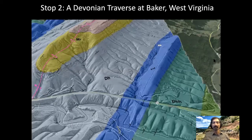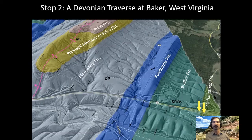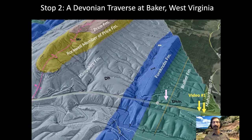So what are we going to see along Stop 2? We'll start down here in the upper Mahantango Formation — the Clearville Member — and move right on up to see the overlying Harrell Shale, a very thin unit only about 15 meters thick, described in more detail in video number one. Next we'll move up the section into the Brallier, where we'll take a look at some of the sandstone beds — seen in their fresh state along the road cuts — described in video number two.